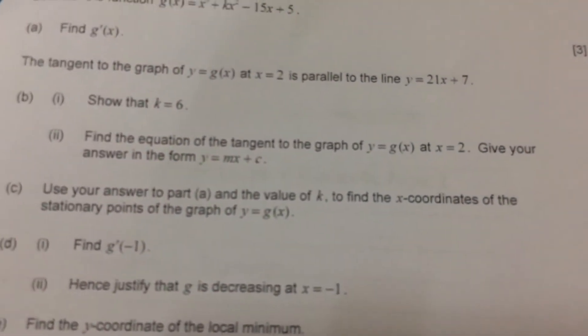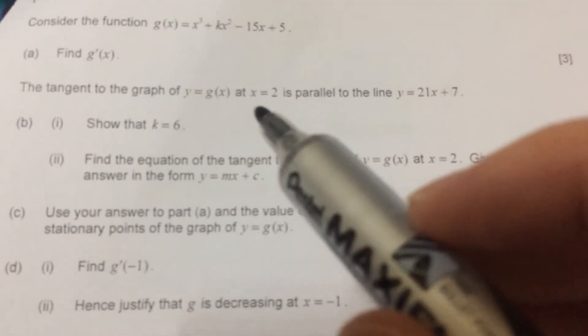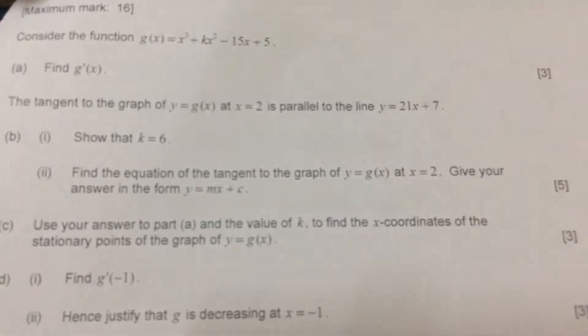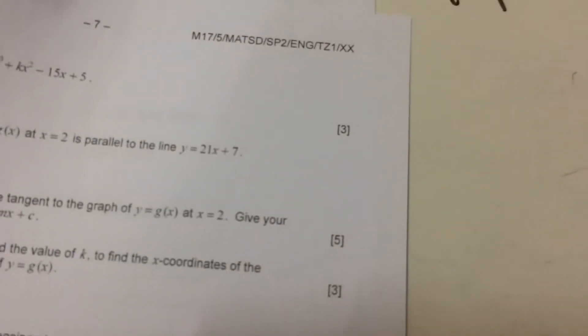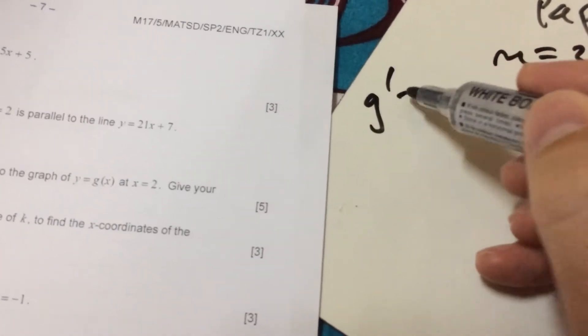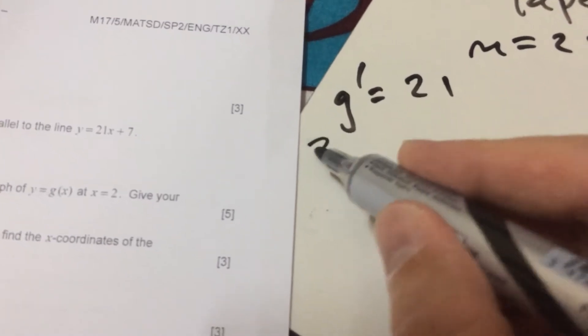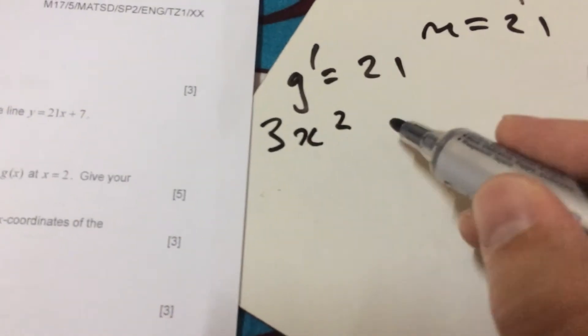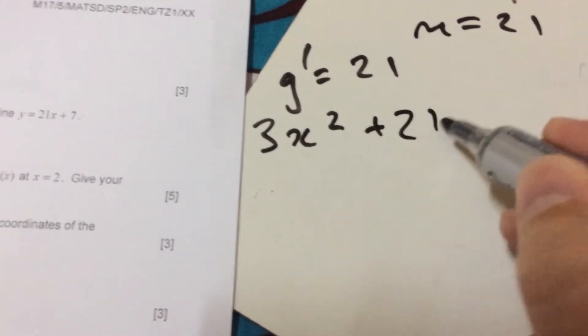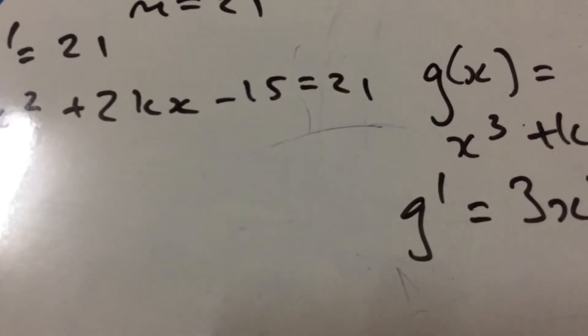The next question says, the tangent to the graph of y = g(x) at x = 2 is parallel to the line y = 21x. Now we know from GCC, something is parallel, it has the same gradient, so that's going to have a gradient of 21, so that means our gradient function g' must equal 21 at that point. So I'm going to put the gradient function that we've just worked out, 3x² + 2kx - 15 = 21.